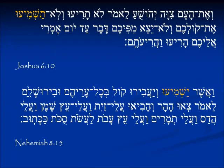In Joshua 6:10, we see the people are about to put into effect the plan for the destruction of Jericho, and Joshua gives them this instruction: lo tariu — do not make a loud noise; lo tashmiu et kolchem — do not cause your voice to be heard. Don't make any noise, no shouting, until I say so.